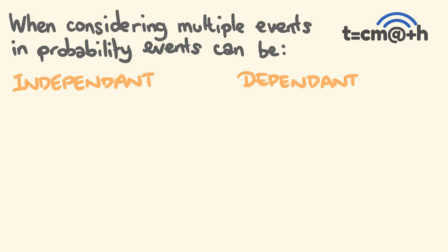When we're considering multiple events occurring in probability, events can be considered either independent or dependent. An independent event is one where each event is not affected by any other event.